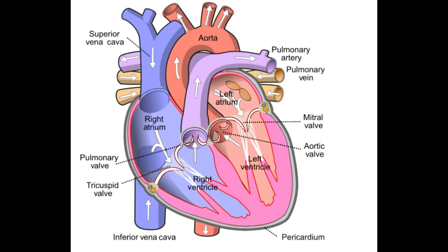The left ventricle is a big one. That's why we pump the purified blood through the aorta branch to the rest of the body.